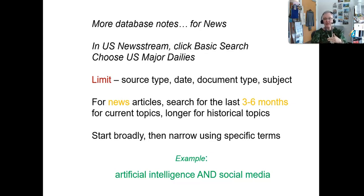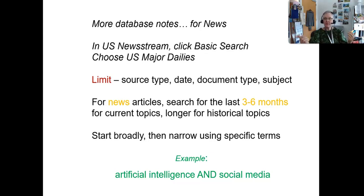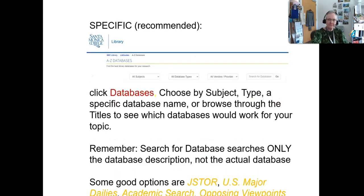Maybe the last week to the last six months for current topics; maybe back to the time of the event for historical topics. And as always, start broadly and then narrow it down. For example, I'm going to use 'artificial intelligence and social media' as a search because I want to see the impact. That's a very current topic that is developing a lot, but there are also social and psychological studies done about social media — so it's a mix of older and newer resources and news. I might go to OneSearch or a specific database to see what I find.